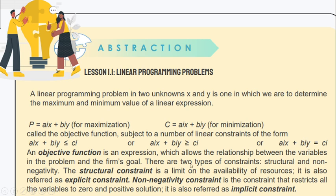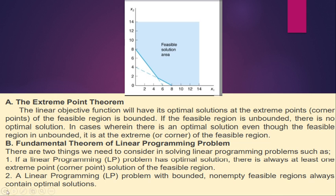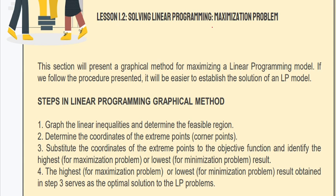The same objective function and structural constraint apply. For non-negativity constraint, we cannot have quadrant 2, quadrant 3, and quadrant 4 because they have negative values. The feasible solution of the minimization is at the top corner area. In maximization it's at the bottom, but minimization is different—it's at the top.